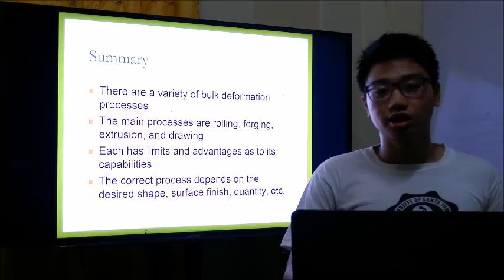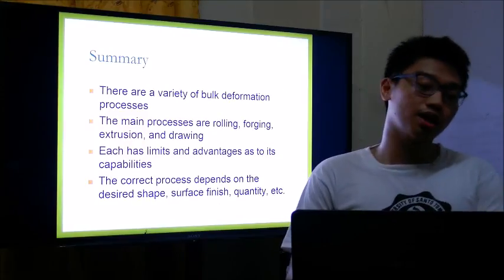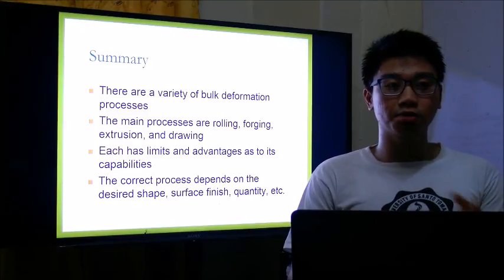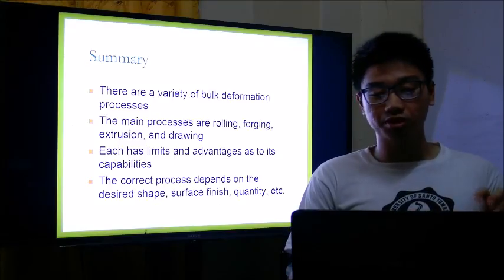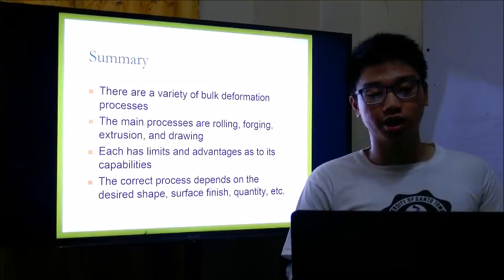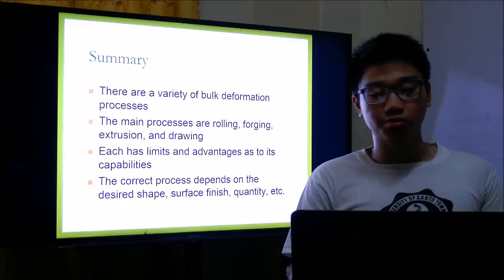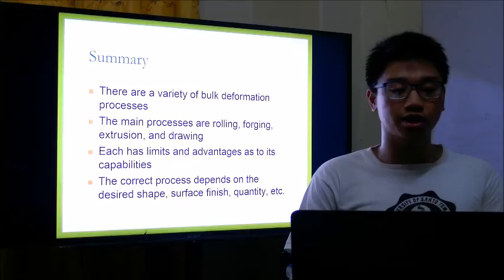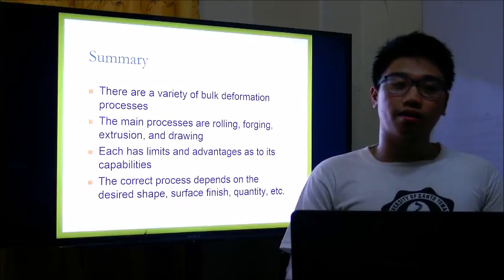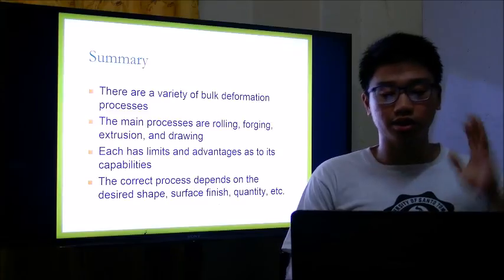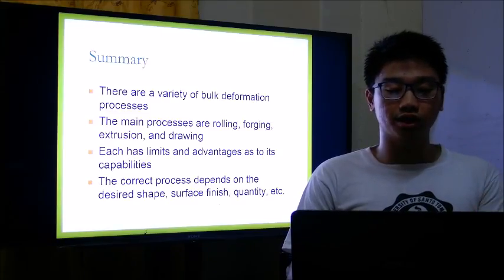In summary of chapter 16, there are a variety of bulk deformation processes. The main processes are rolling, forging, extrusion, and drawing. Each of these processes has limits and advantages as to its capabilities. Determining the correct process depends on the desired shape, surface finish, and quantity.